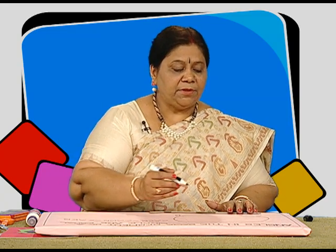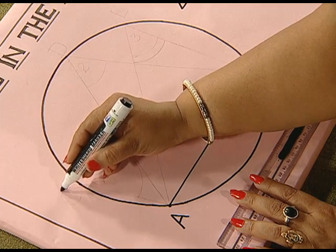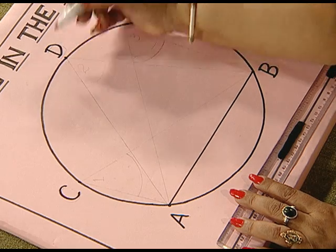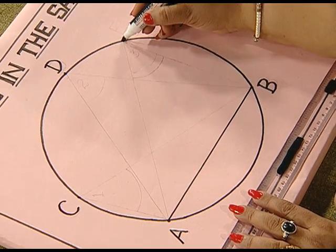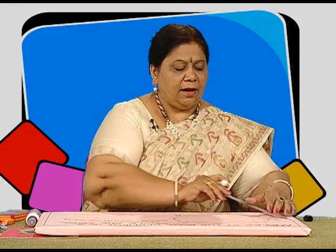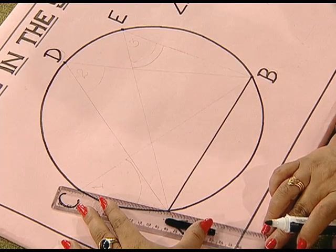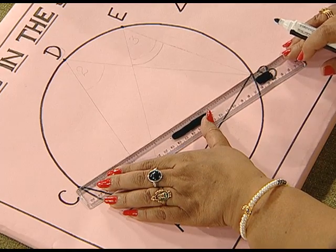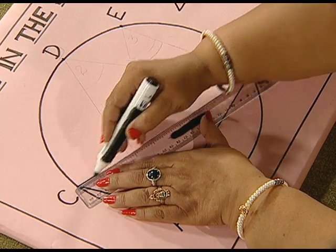Now, as we are concerned about the angles in the same segment, let us take three arbitrary points in the same segment, namely C, D, and E. Now we join points A and C, and C to B, to obtain angle ACB.